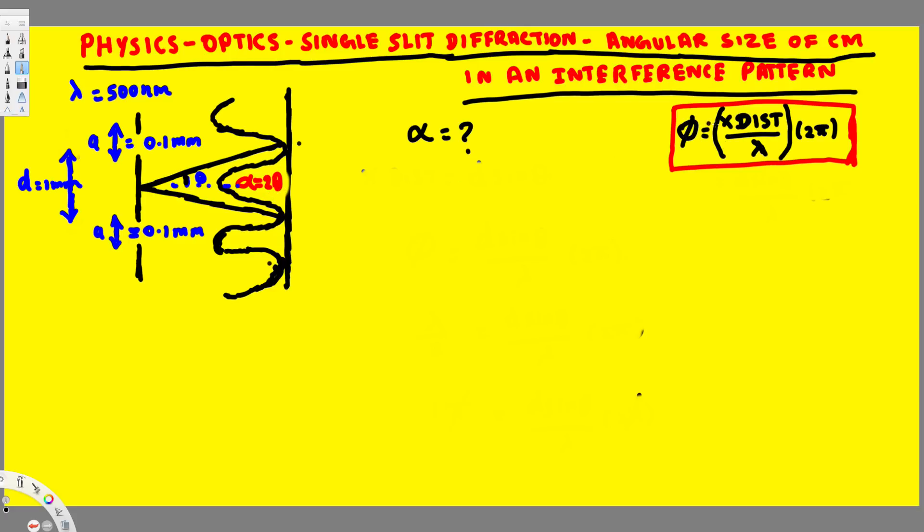This is a generic equation that is phase angle is equal to x distance over lambda times 2 pi. Now let's go ahead and plug it, but before we do that we have to know what is x distance.